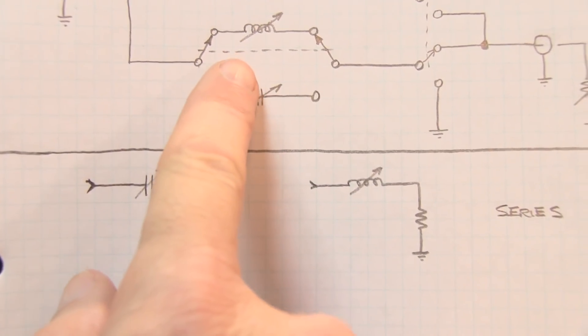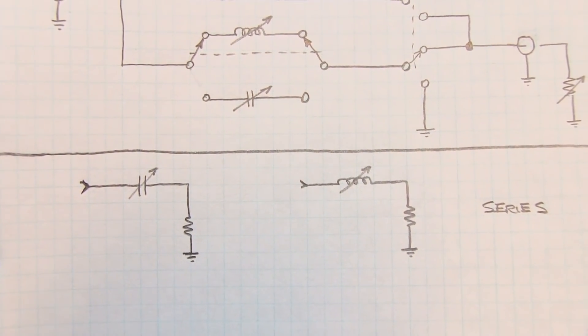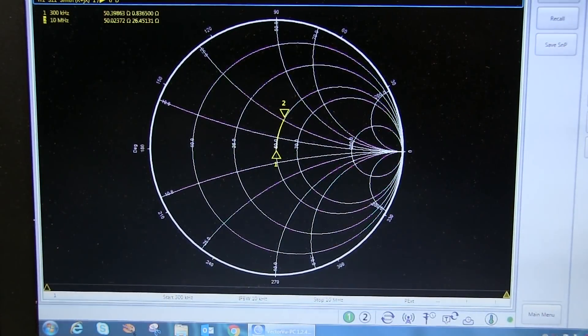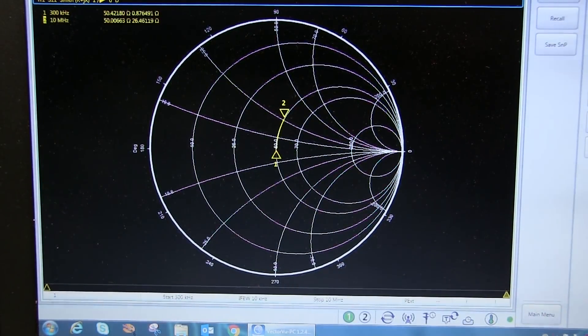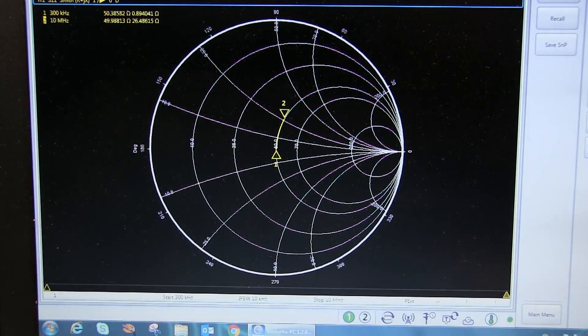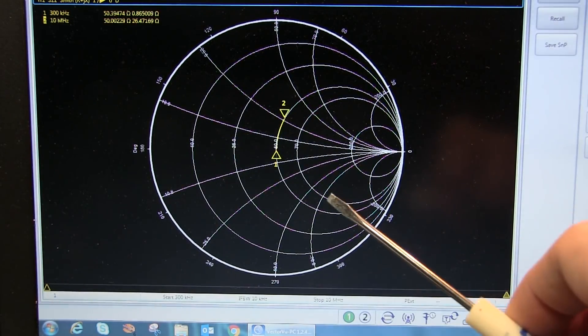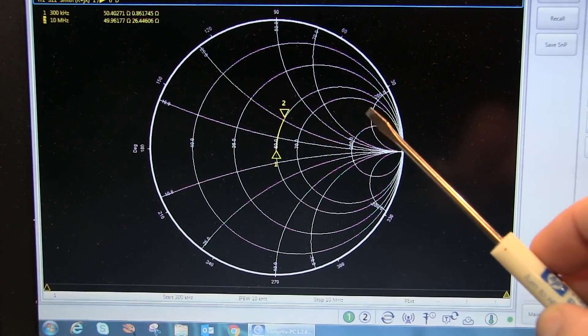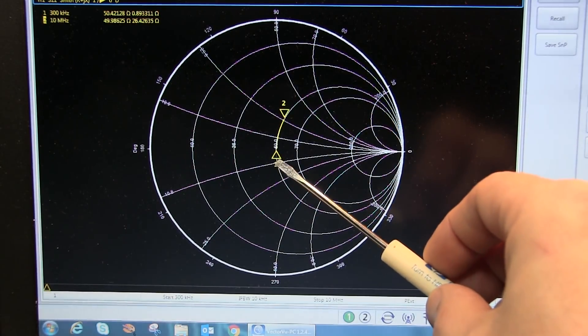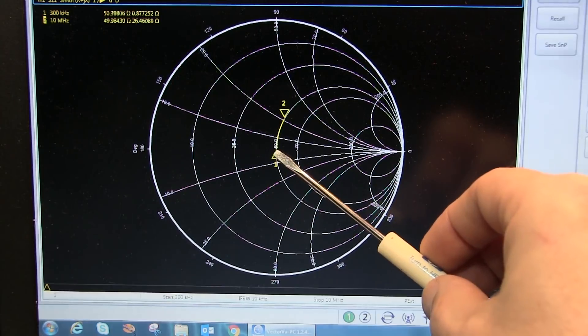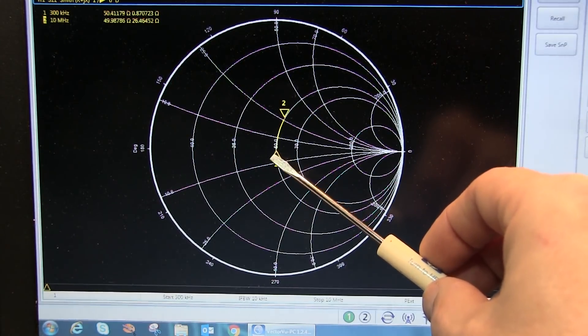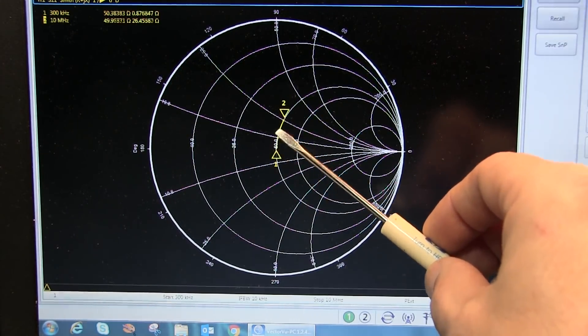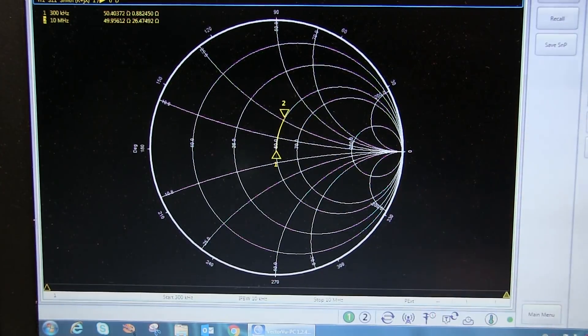Now let's throw this switch and put the variable inductor in series and see what that looks like. Now I've got the inductor in series, and I've got the inductor dialed down to its minimum value, which is about a half a microhenry or so. And again at a half a microhenry, there's very little inductive reactance at 300 kilohertz, so our marker one is sitting very close to our system impedance of 50 ohm resistive, and at 10 megahertz we're seeing a little more inductive reactance due to that inductor value. Let me dial up the variable inductor here, and again we can see ourselves tracing around that constant resistance circle as we bring the inductance higher and higher.